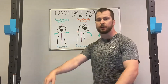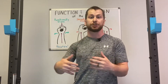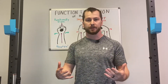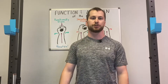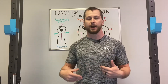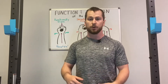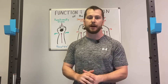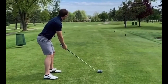Those were more static loading positions, but most sports require dynamic function or dynamic stabilization of the wrist. Now we're going to take a look at a common example of dynamic motion through the wrist, as seen in a golf swing.